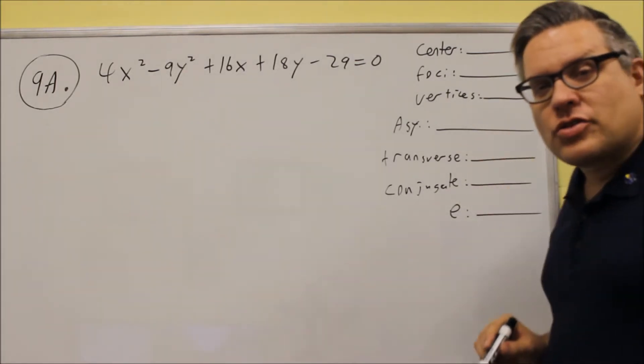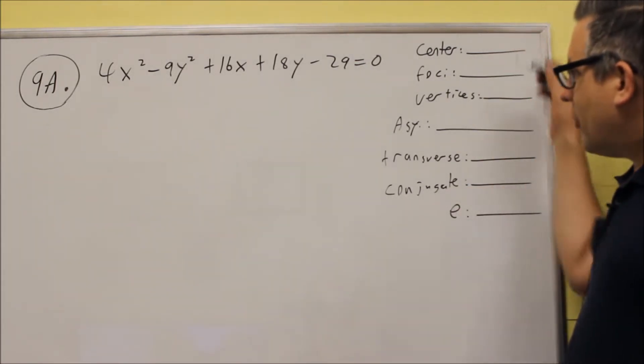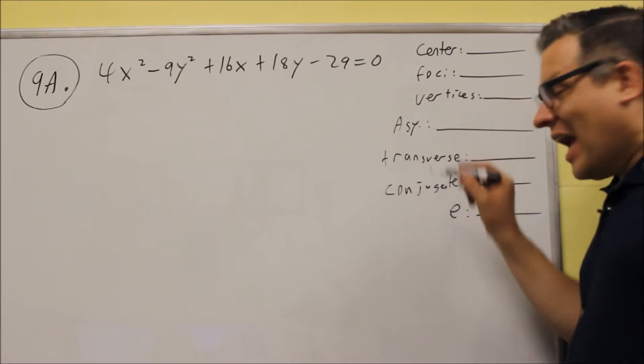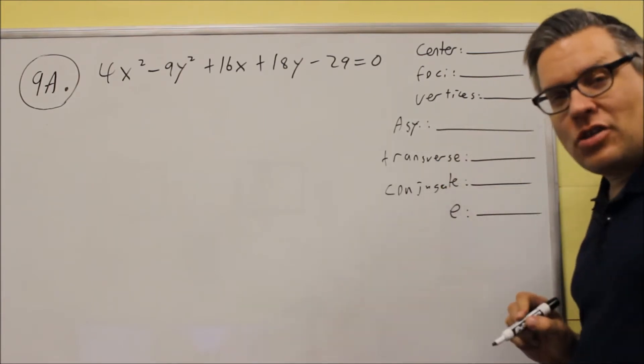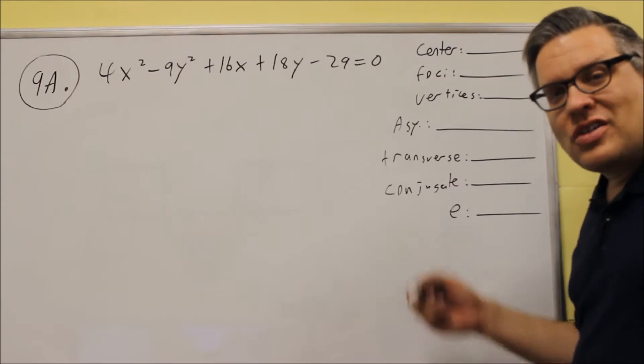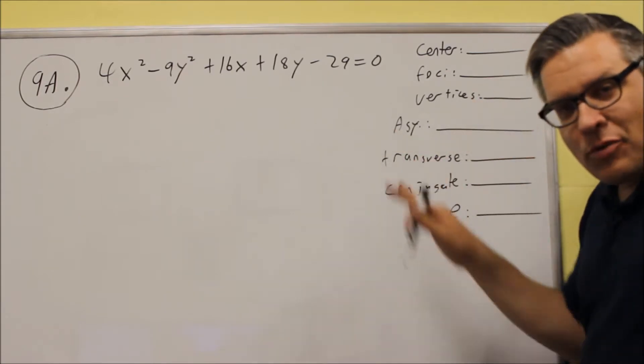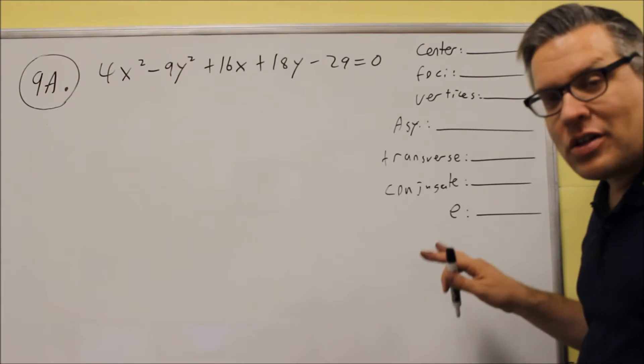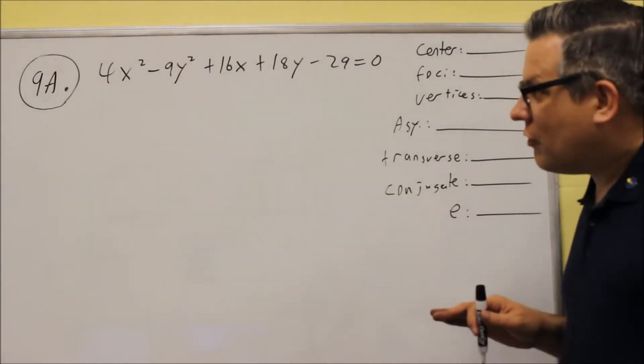look at what kind of things they're asking you for in the question itself. Now this one's asking you for asymptotes, transverse, and conjugate. Now the only graph that has those is going to be the hyperbola. So this is going to be a type of hyperbola, so it's good to know ahead of time what kind of graph you should be looking for.